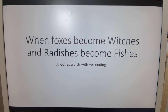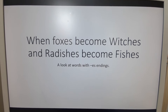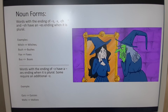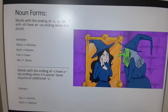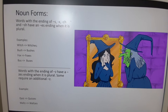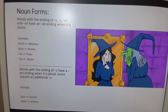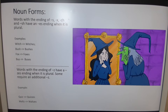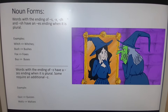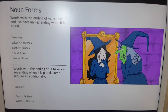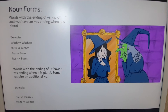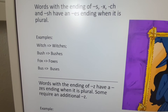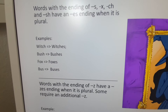When foxes become witches and wretches become fishes, we're looking at words that have the ES ending. We're looking at the ES forms for noun forms, for example, that are used for plural forms. Basically, words that have endings of S, X, C-H, or S-H normally have an ES ending when plural. In this case, of course, it's also voiced. So if we take a look at some examples, the singular for witch — witches, and for singular bush, it's bushes for plural.